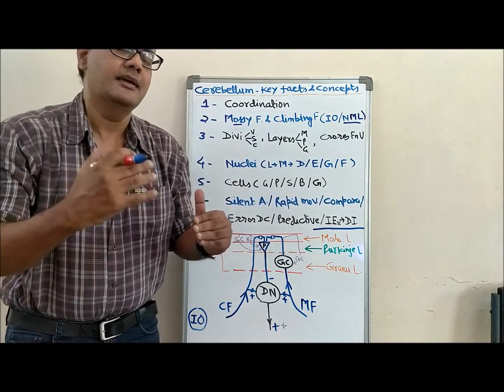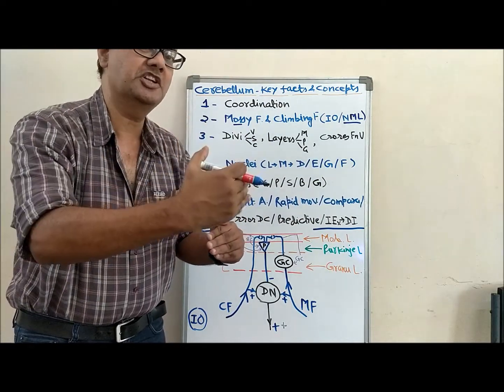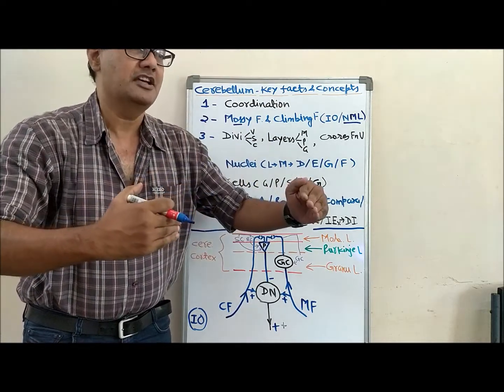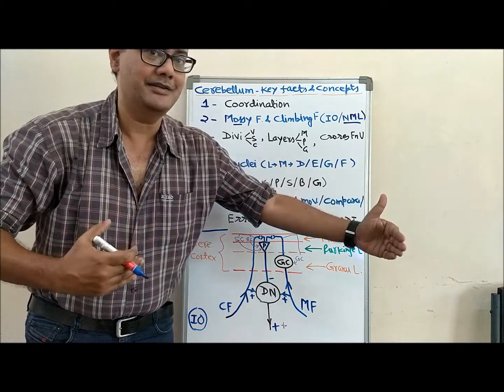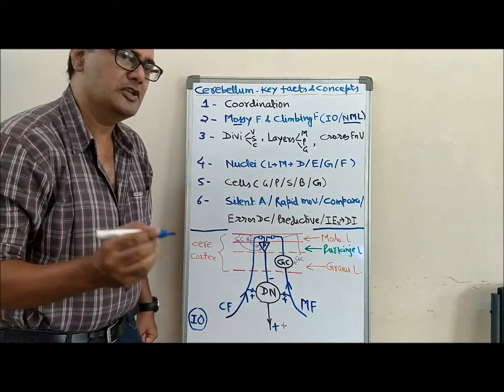Cerebellum neurons can do predictive function. Based on present information, they can predict position of body after fraction of second ahead. That's why cerebellum is so useful to coordinate rapid motor movements.